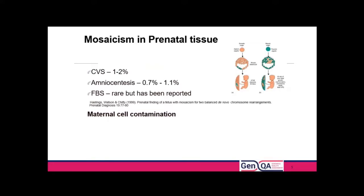The figures usually quoted for mosaicism: for CVS it's around one to two percent, much lower in amniocentesis, and most of these will represent true fetal mosaics. Mosaicism differs for different chromosomes. For Down syndrome in live births, mosaicism is extremely rare — about one to two percent of Down syndrome individuals. The level is much higher for chromosome 13 in particular, and for the sex chromosomes, for monosomy X in particular, it can be around 40 percent of cases.